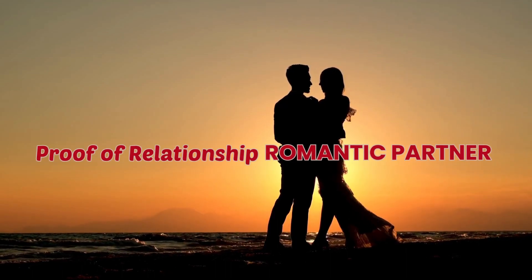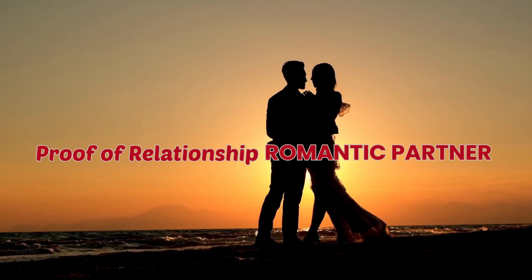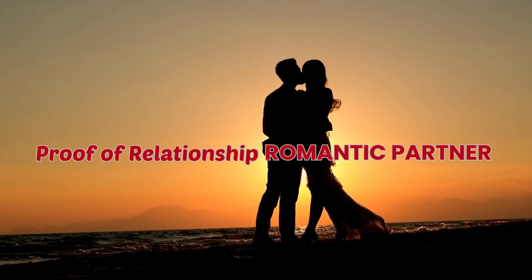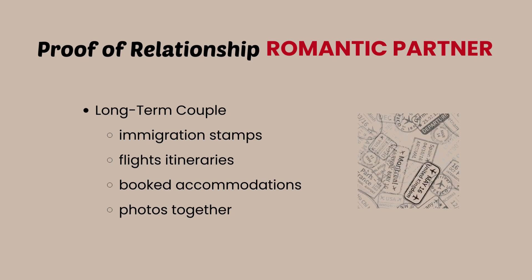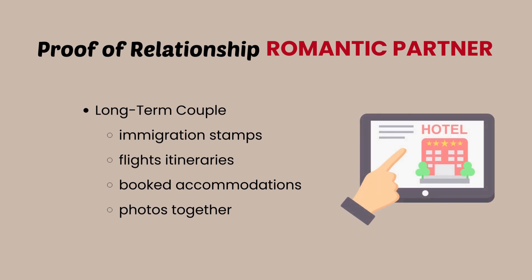Now we move on to the proof of relationship for romantic or intimate partners. I have divided this into two parts: those for long-term couples, and for those couples who have never met. So first off, for long-term couples — these are the ones I have personally submitted. The first one is immigration stamps: the different entry and exit stamps of travels that you have been to together if you've been traveling abroad with your partner. You can also include a copy of flight itineraries if you've been traveling domestically, as well as a copy of booked accommodations, whether it is in both your names or just your partner's or your name.